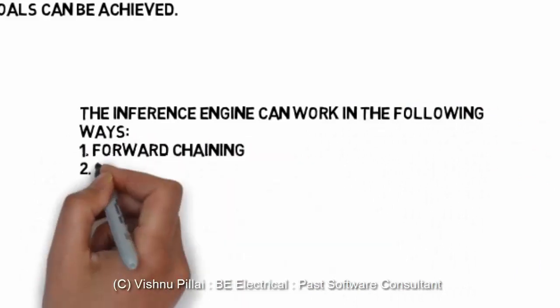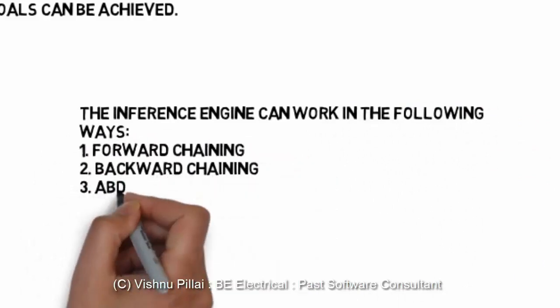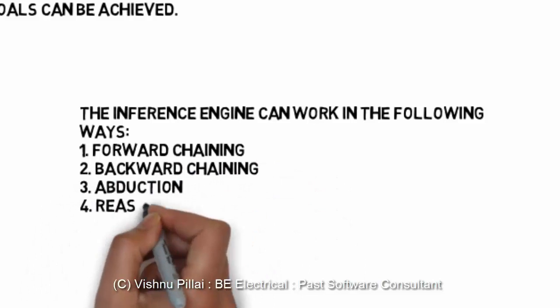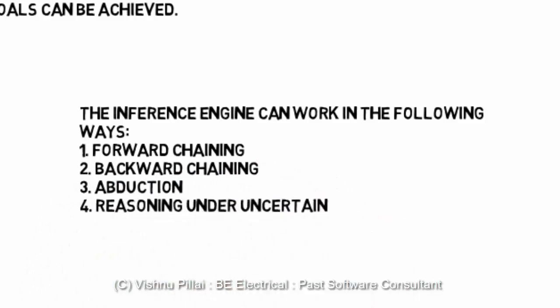The inference engine can work in the following ways: forward chaining, backward chaining, abduction, and reasoning under uncertainty.